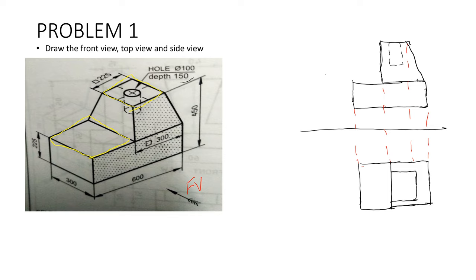This is our top view and it clearly indicates we have two squares — first square and then second square — which has been easily drawn. We have the extension lines from this hollow circular block, and this has been extended. We are clearly drawing the circle here at the center. This is the clear representation of the top view and this hollow circle extends 150 mm in depth.